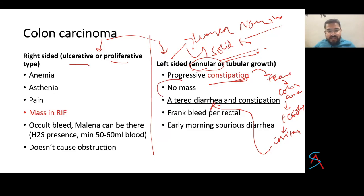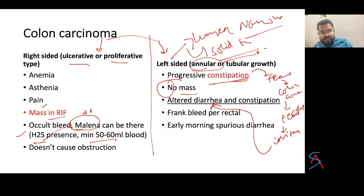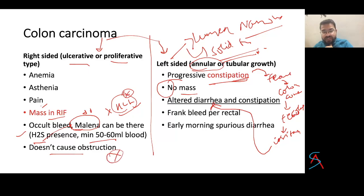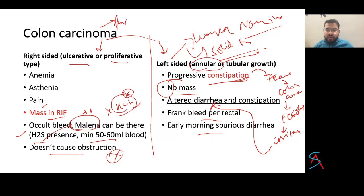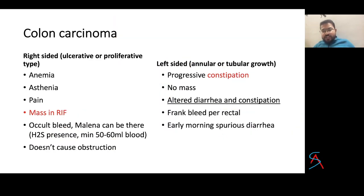In left-sided colon malignancy there may be no mass or it may be present; in right-sided colon malignancy there is pain, occult bleed, and possibly melena — because bacteria in the colon act on the blood causing melena, and unlike peptic ulcers it is not due to HCl. Right-sided lesions do not cause obstruction or constipation/diarrhea. In left-sided lesions, frank rectal bleeding and early morning spurious diarrhea occur. Colonic metastases most commonly go to the liver but do not cause jaundice.